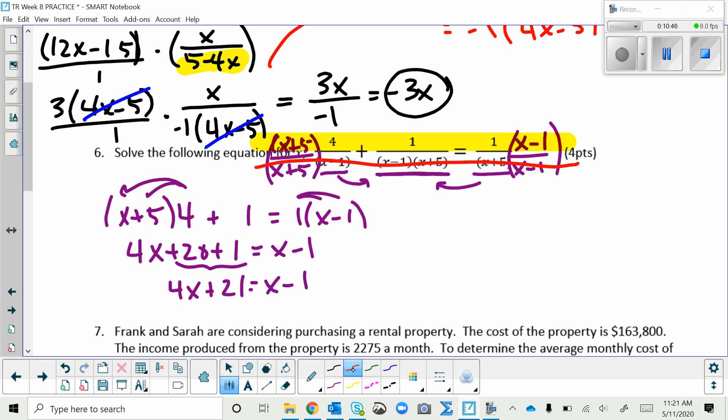And then move the X's to the left and the constant to the right. And that will give me 3X equals negative 22. Divide both sides by 3. And X equals negative 22 thirds.